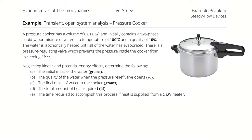A pressure cooker has a volume of 0.011 cubic meters and initially contains a two-phase liquid-vapor mixture of water at a temperature of 100 degrees Celsius and a quality of 10%. The water is isochorically heated until all the water has evaporated. There is a pressure-regulating valve which prevents the pressure inside the cooker from exceeding 2 bar. Neglecting kinetic and potential energy effects, determine: the initial mass of the water in the cooker, the quality of the water when the pressure relief valve opens if it opens, the final mass of the water in the cooker if different from the initial mass, the total amount of heat required, and how long it would take if the heat is supplied from a 1 kW heater.